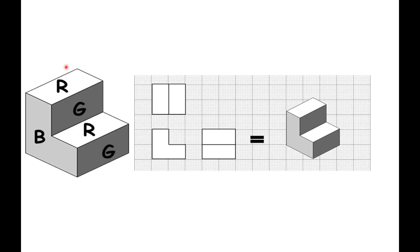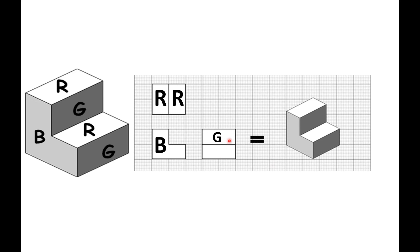Let us have another one. In this object we have the letters B, R, G, R, and G. Let's place those letters in the orthographic view. For the top view, we have the letter R on the left side and another R on the right side — these two are the top view of the object. For the front view, we have the letter B, representing the L-shaped object. And lastly, we have the letter G at the top portion of the side view and another G for the lower portion of the side view.